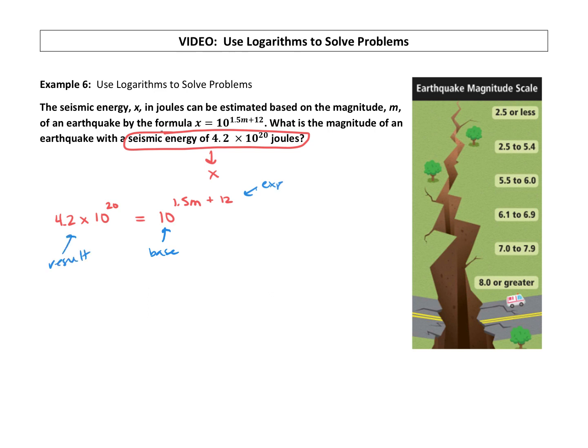So in log form, we would say log base 10. Well, that's a common logarithm, so we don't have to write the base 10. So log of the result, I'm going to put this in parentheses, 4.2 times 10 to the 20th power is equal to our exponent, 1.5M plus 12.